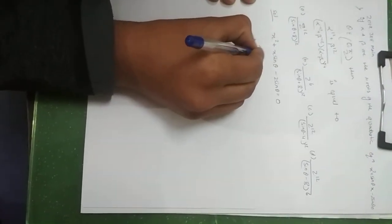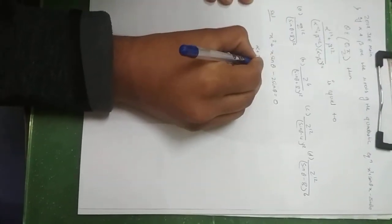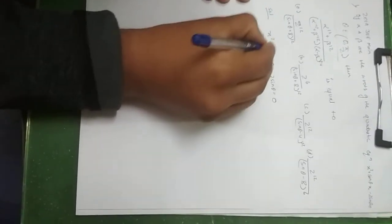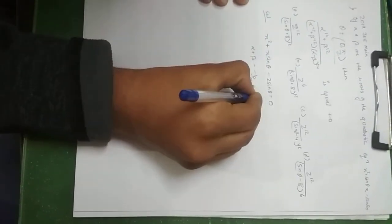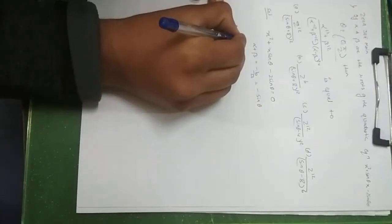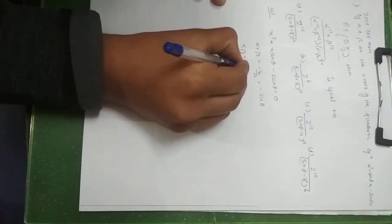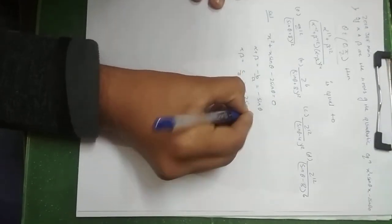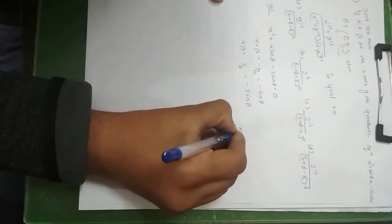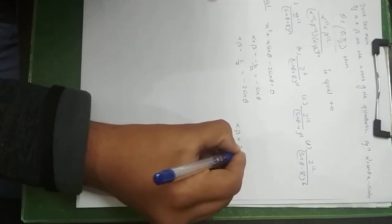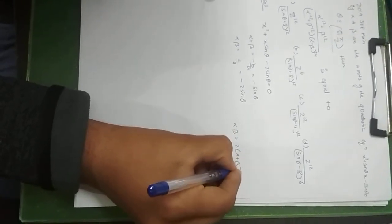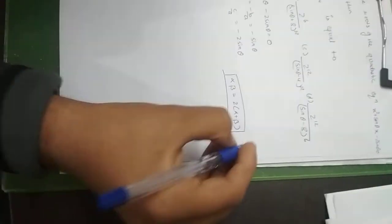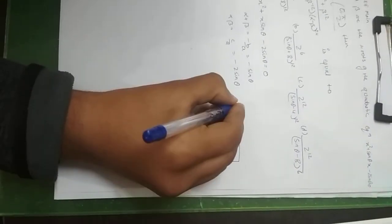We take the sum of roots and product of roots. Sum of roots is −b/a, so the value is −sinθ. And product of roots is c/a, so the value is −2sinθ. We can see that alpha times beta equals −2sinθ. This is useful information we have observed, and we will use it later.